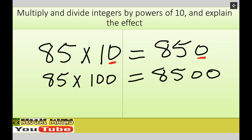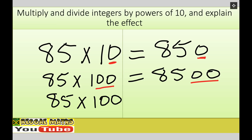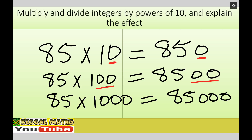85 multiplied by 1,000 is 8, 5, 0, 0, 0. Again, the link here: three zeros, three zeros. So that's 85,000.